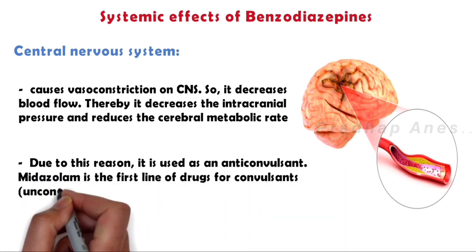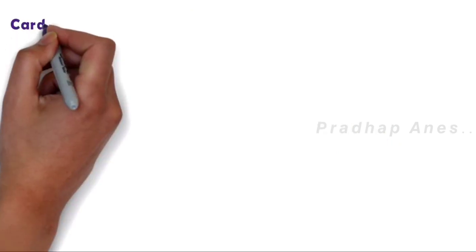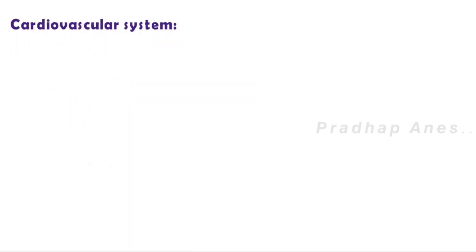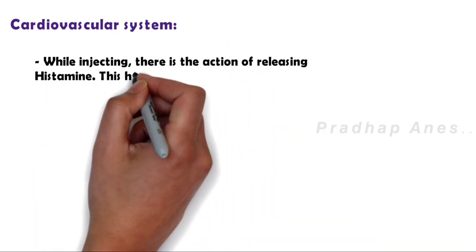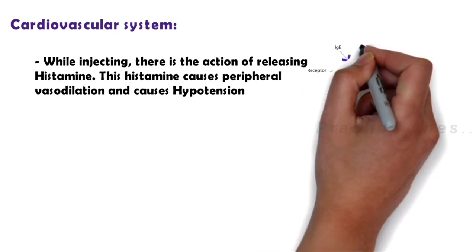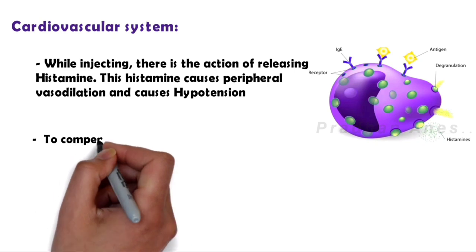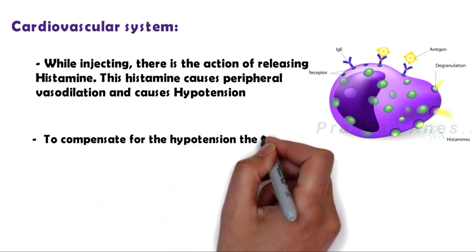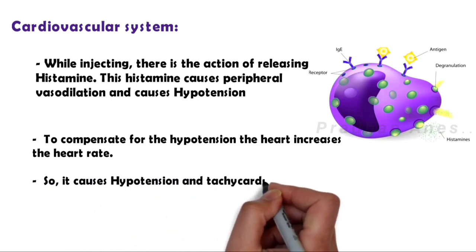Cardiovascular system: While injecting, there is the action of releasing histamine. This histamine causes peripheral vasodilation and causes hypotension. To compensate for the hypotension the heart increases the heart rate, so it causes hypotension and tachycardia.